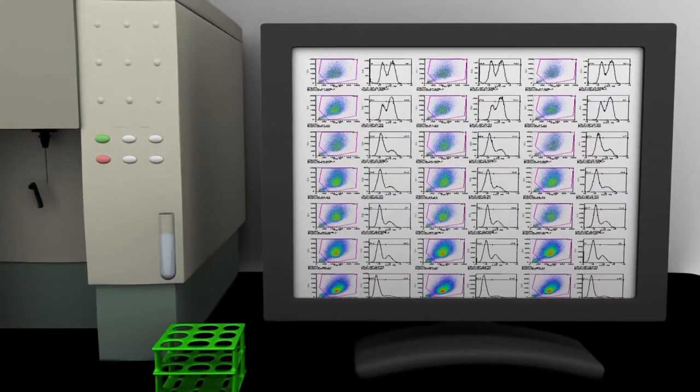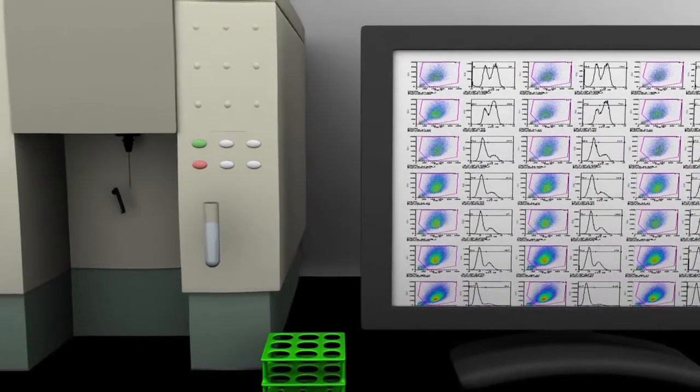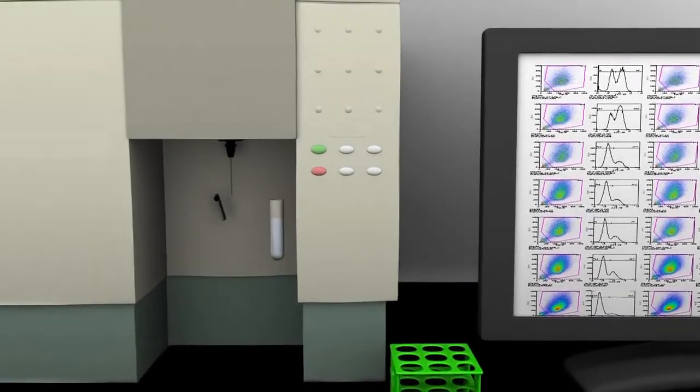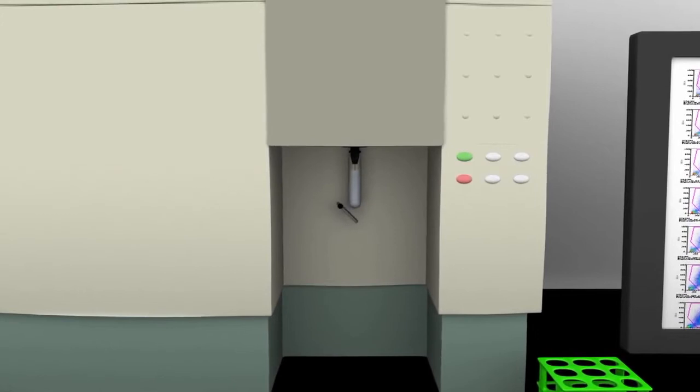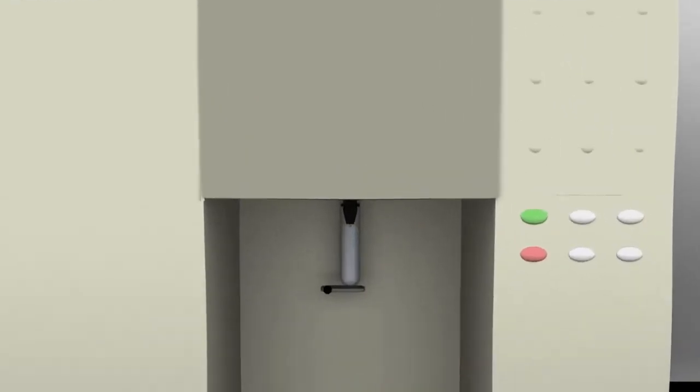Once a suspension of individual cells has been prepared for flow cytometry analysis from cells, tissues, or organisms, the prepared sample is placed on the flow cytometer. How does a flow cytometer analyze the size, shape, and properties of individual cells?